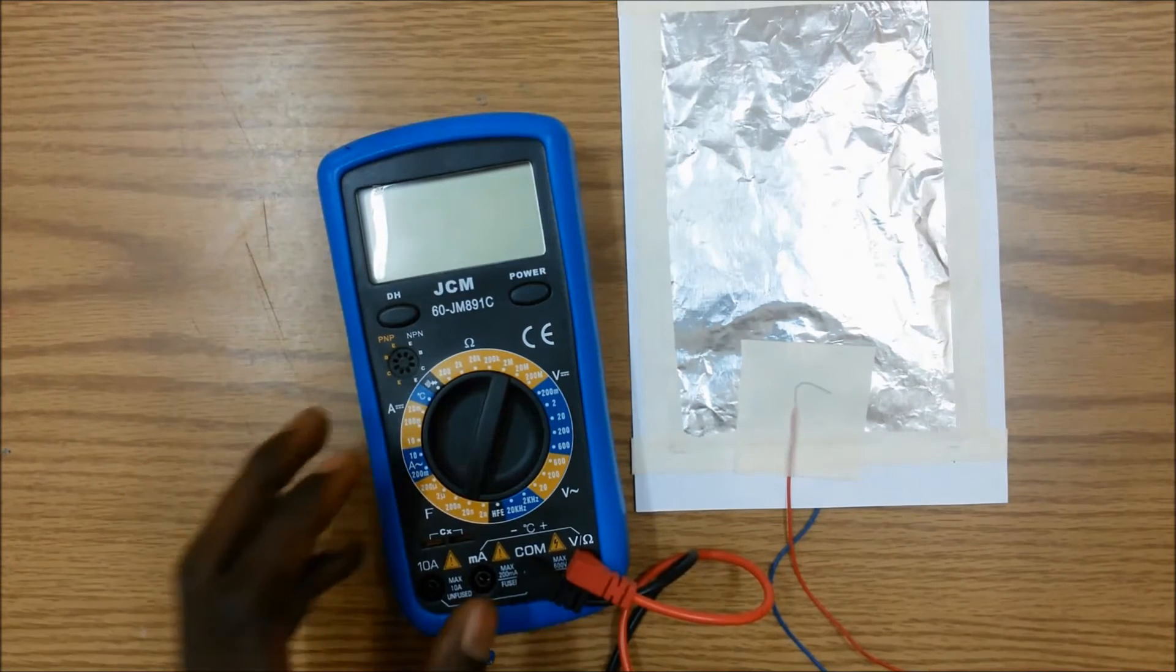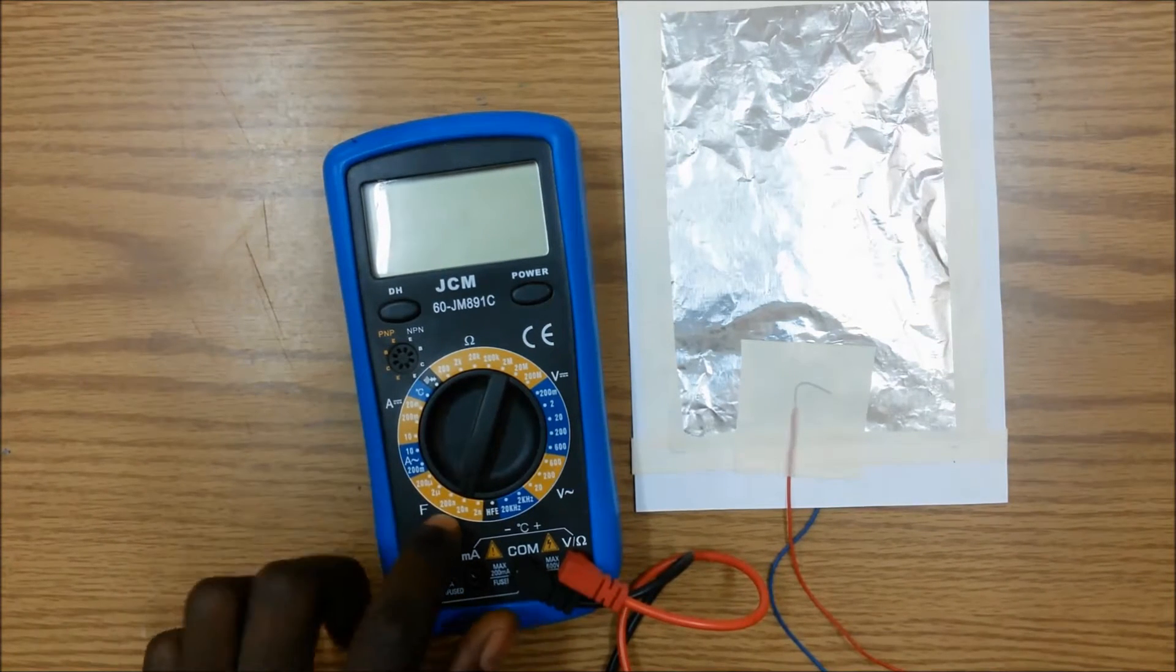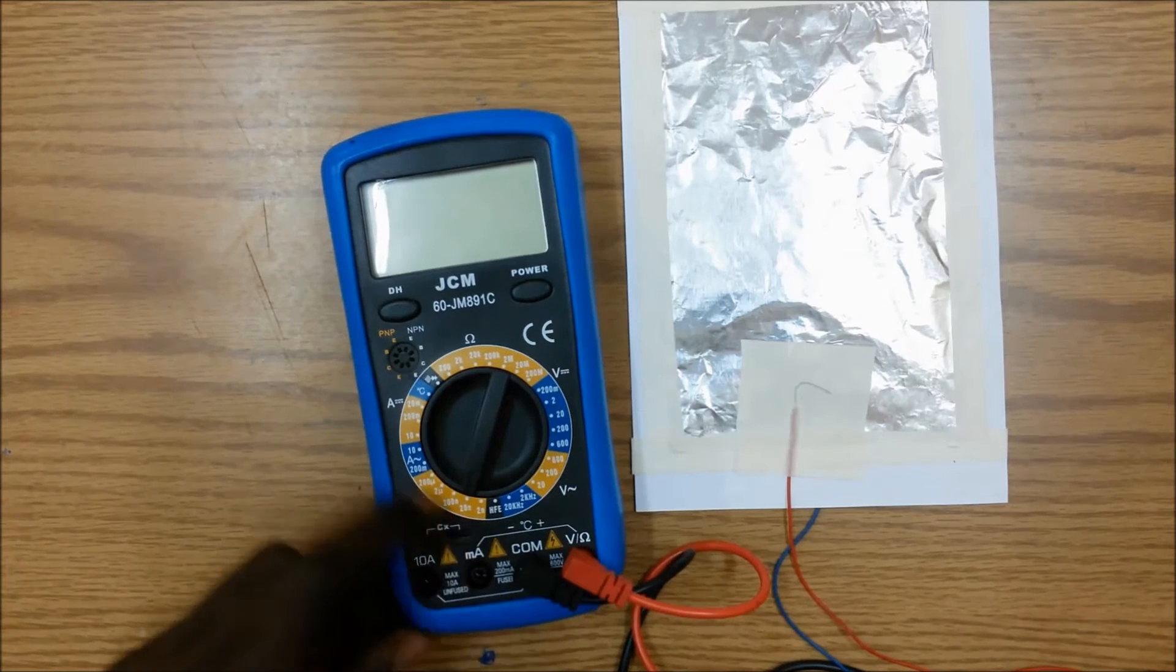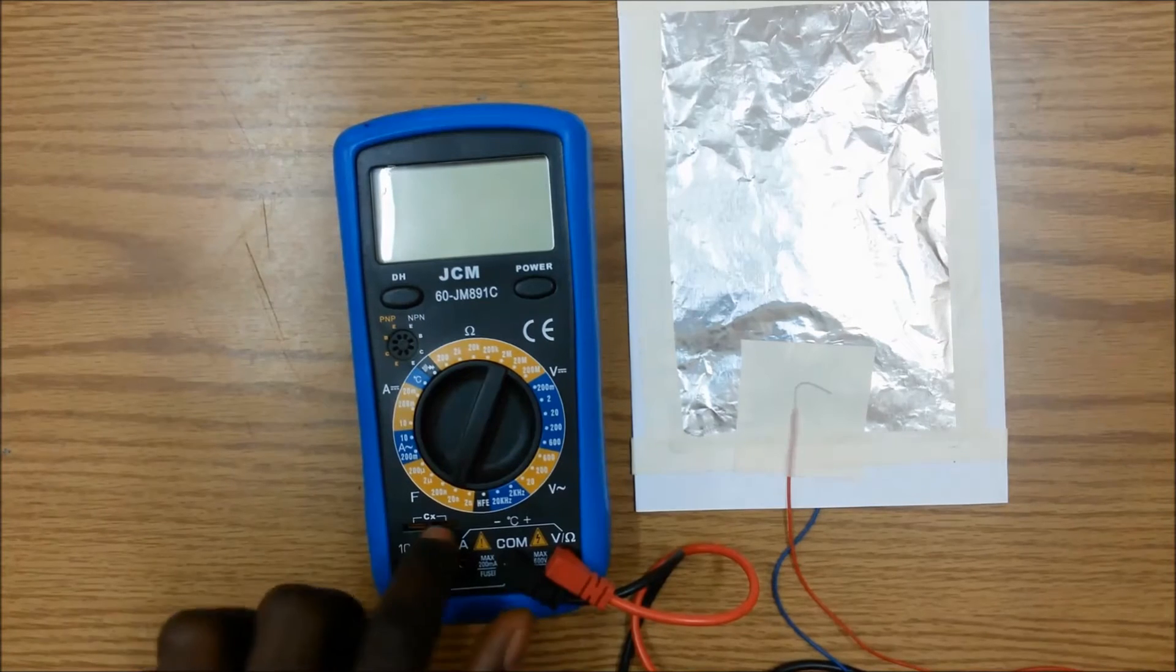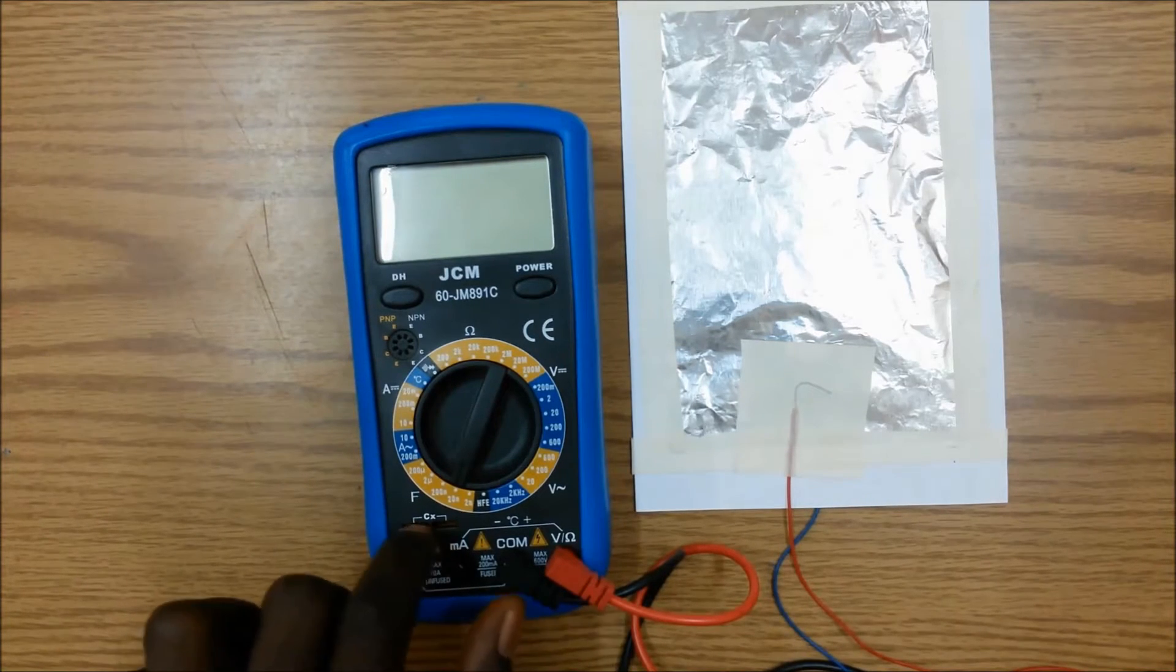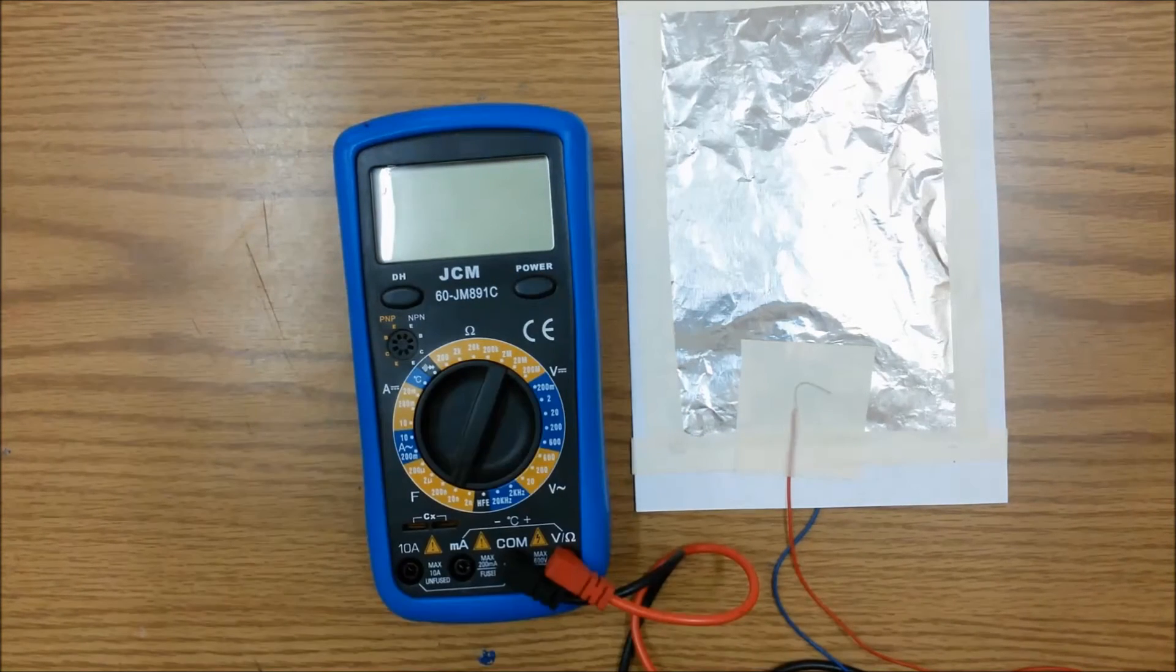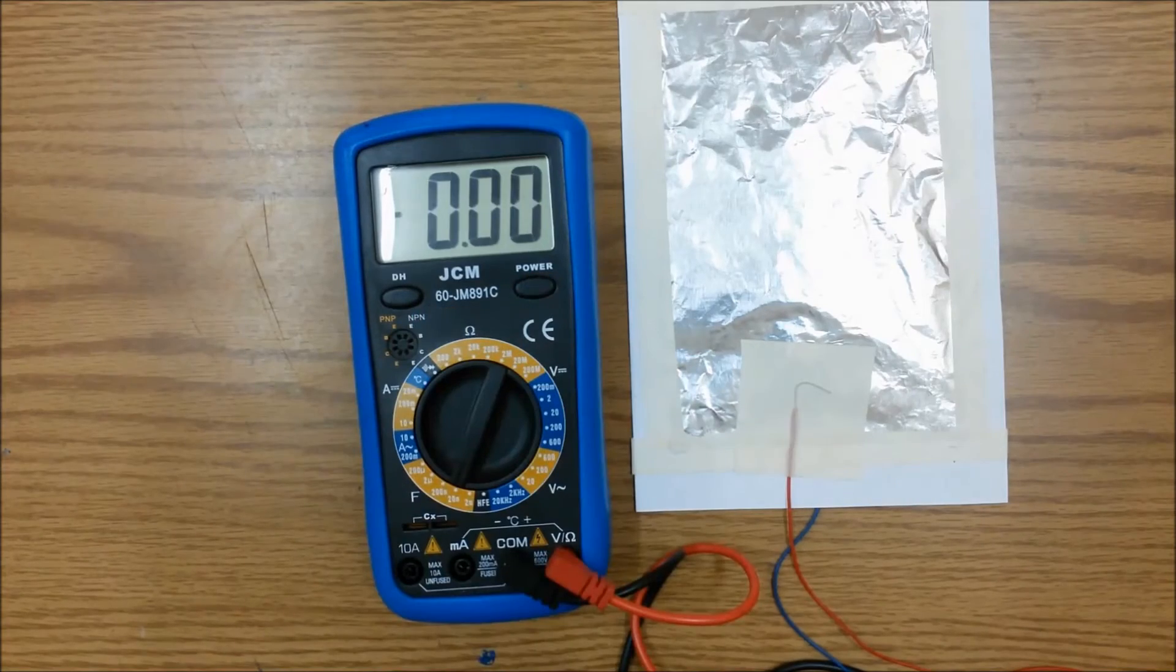For this we'll be using a multimeter with a capacitance function. This multimeter measures capacitance by simply plugging in the capacitor in these two sockets here. So let's start by turning on our multimeter.